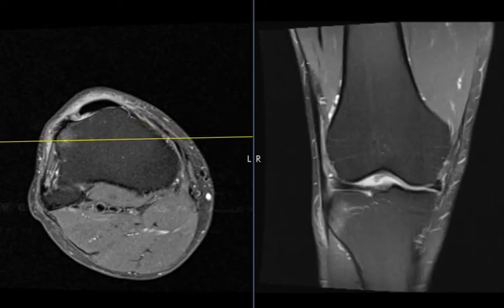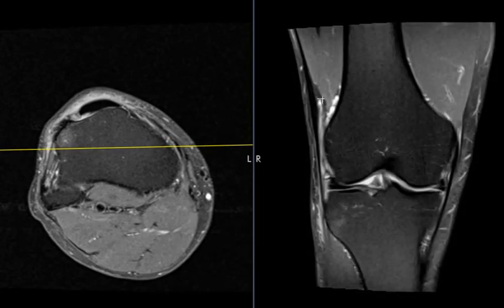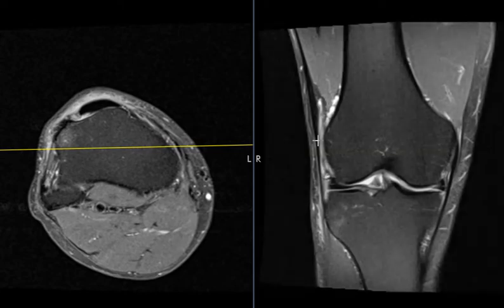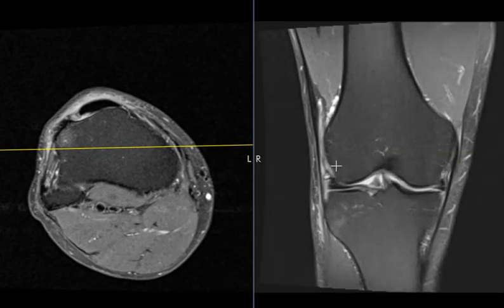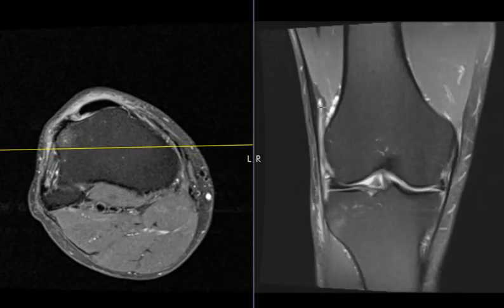This is the iliotibial band coming down, and the iliotibial band is going to come down here and attach below the knee on Gerdy's tubercle. Right here we see this band of bright signal — a vertical area of increased signal. This is between the ITB and the femur, and this is inflammation. So this is related to iliotibial band friction syndrome from jogging.